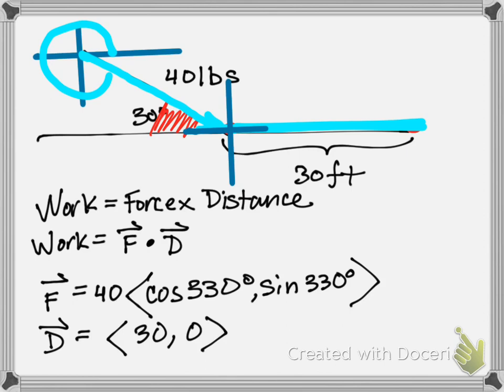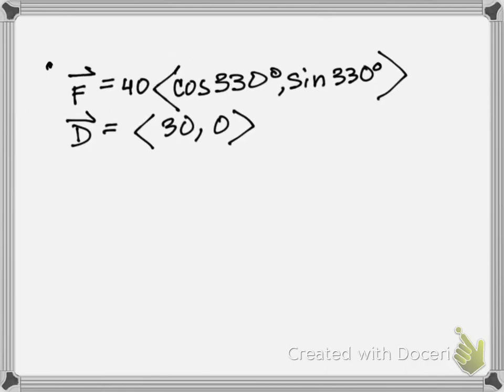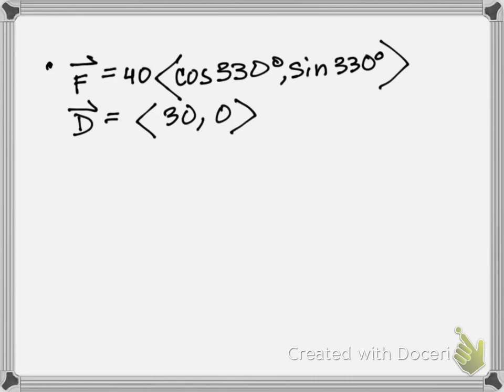Now I've got a force vector and a distance vector, and I just need to do the dot product. Let me take these and find a bit more room. A dot product just gives me a real number value. So I'm going to do 40 cosine 330 degrees times 30, plus 40 sine 330 times zero.